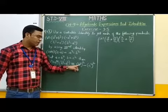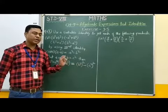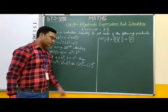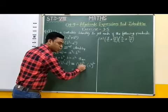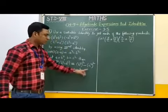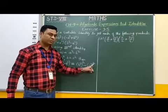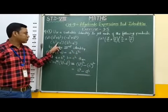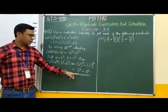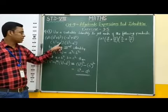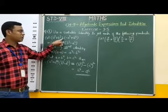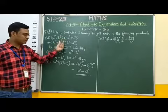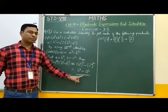We have to simplify this. Here we have power raised to power, so we use the exponent rule: power raised to power means we multiply the two powers. Therefore, b raised to 2 raised to 2 means 2 into 2 equals 4, giving b raised to 4. Minus a raised to 2 raised to 2, multiplication of the two powers gives a raised to 4. Therefore, b square plus a square multiplied by b square minus a square is equal to b raised to 4 minus a raised to 4, by using the third identity.